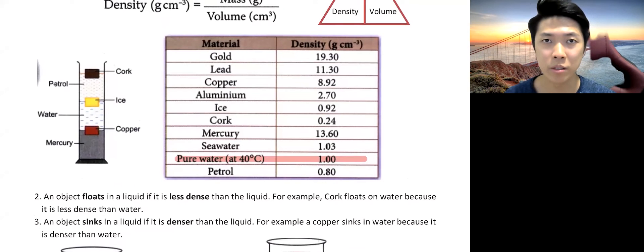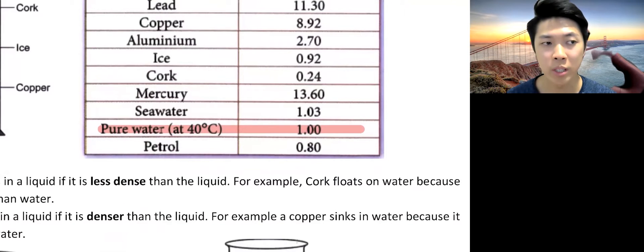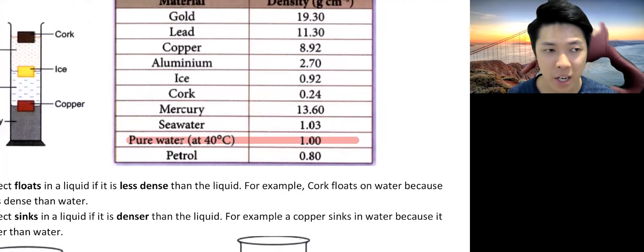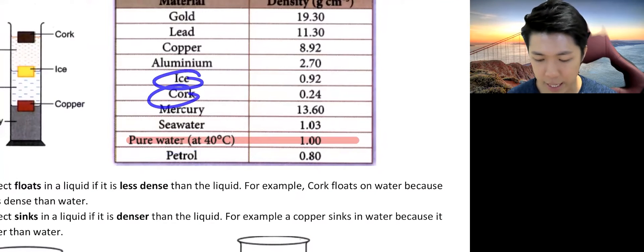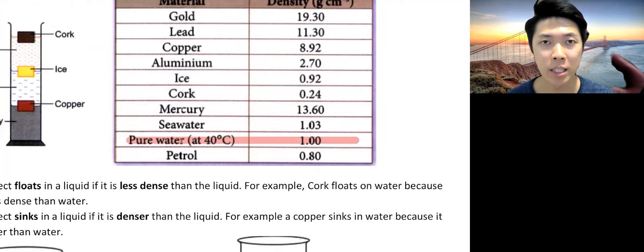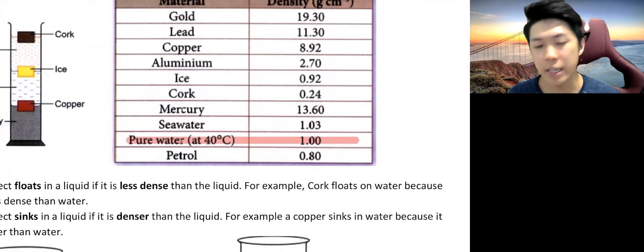So this is a list of materials with their density shown. I would suggest you remember pure water as 1 g cm⁻³ because 1 is a very good number. Any numbers that are smaller than 1, for example like petrol, like cork, like ice, that will float because it has lesser density compared to water. And anything has larger number than 1 means it has greater density, hence it will sink.